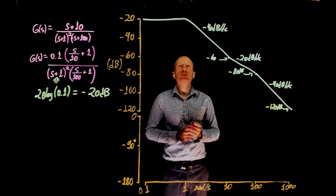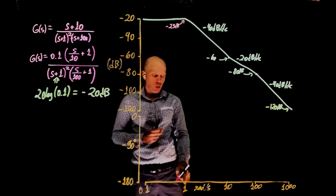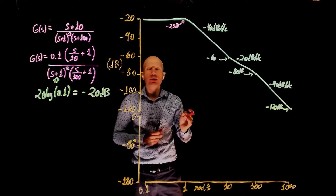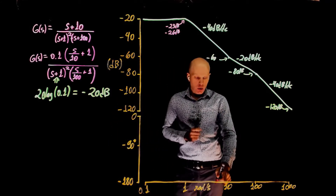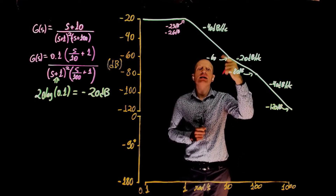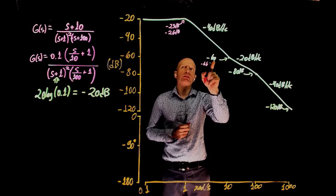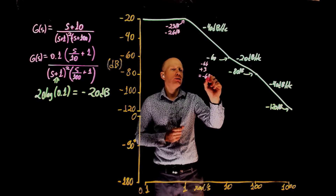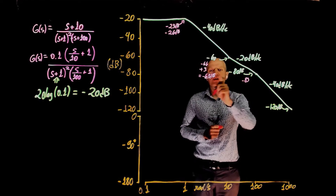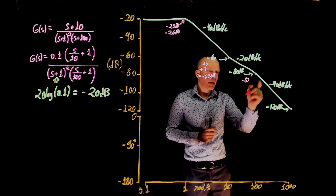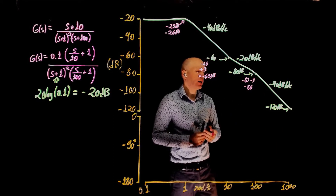Of course, here we neglect the 3 dB at each cutoff frequency. In reality, at ω=1 the magnitude should be negative 23 dB for one pole at negative 1, but because we have two poles it should be negative 26 dB — negative 3 dB for each. At ω=10, the zero adds 3 dB above the current value, so we would have approximately negative 63 dB. At ω=100, we would have negative 63 minus 20 = negative 83, minus the 3 dB from this pole, giving negative 86 dB. And at 1000 rad/s we would be at negative 126 dB.